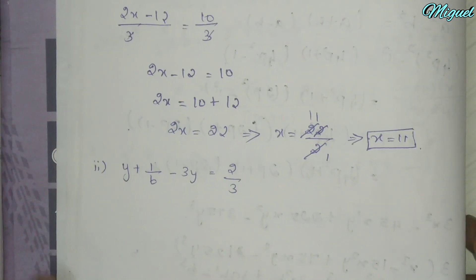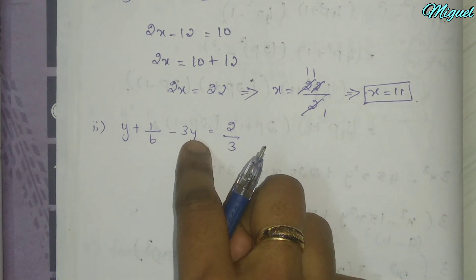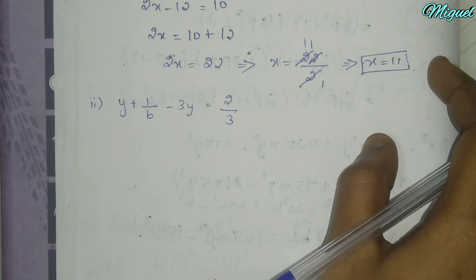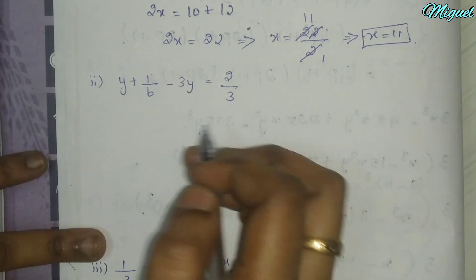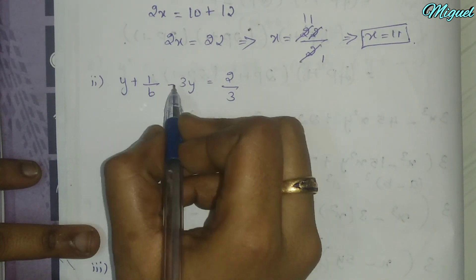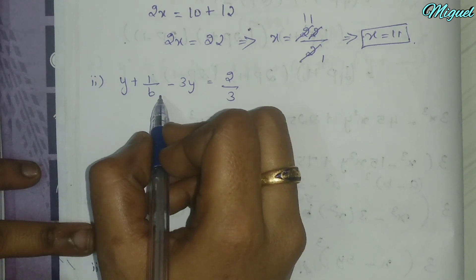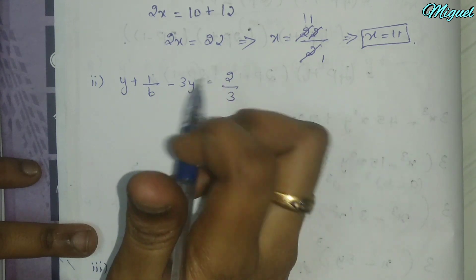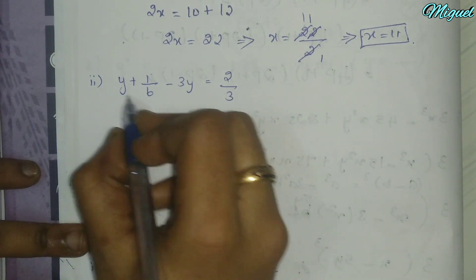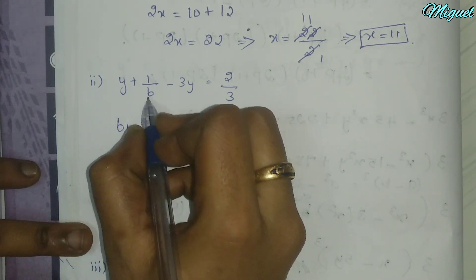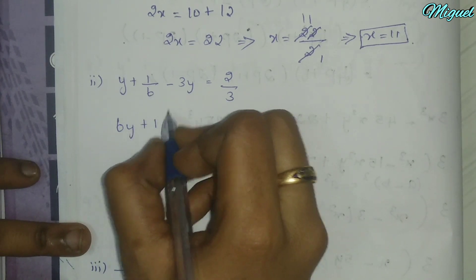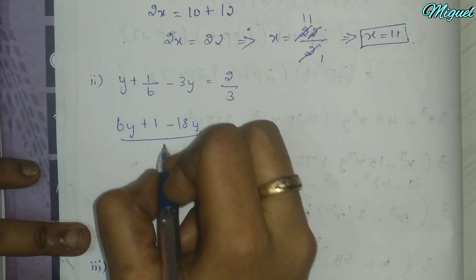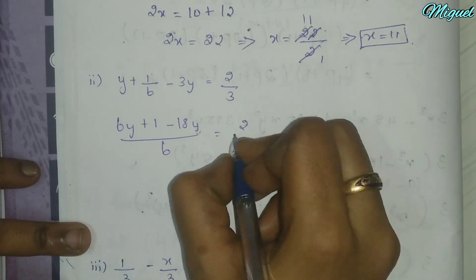Subdivision number 2: we start to solve this problem. First, we need to cross multiply and find the LCM. The LCM of the denominators will be used to multiply. We get 6y plus 1, and 6 threes are 18, so minus 18y divided by 6 equals 2 by 3.